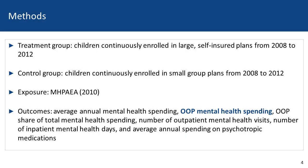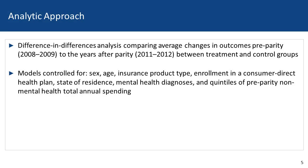So for this analysis, our treatment group will be children enrolled in the large self-insured plans that are subject to the federal parity law, and our control group are children continuously enrolled in the small group plans that are exempt from parity. The treatment or exposure we are looking at is the federal parity act implemented in 2010, and the study has six outcomes of interest. The approach is a difference-in-differences analysis comparing changes in outcomes pre and post parity between the treatment and control groups. The study also controlled for individual and insurance plan characteristics in the models.